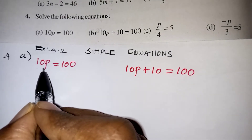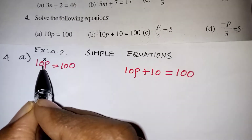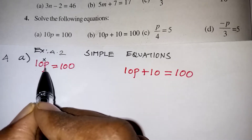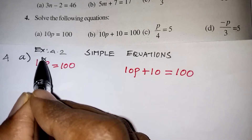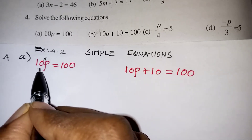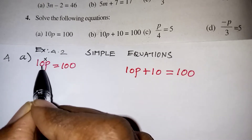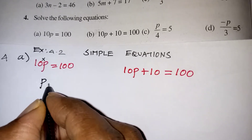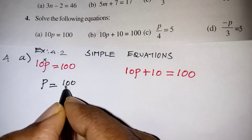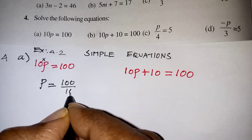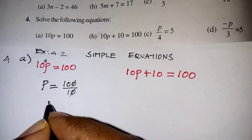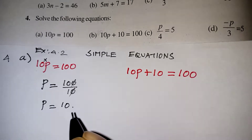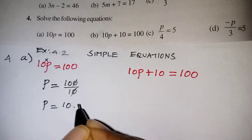So 10p means 10 multiplied by p. There is no symbol between a number and variable, so we take the multiplication sign. If we take the multiplication number to the other side, it will become division. So p is equal to 100 by 10 — the zeros get cancelled — so p is equal to 10. The denominator 1 you don't need to carry.